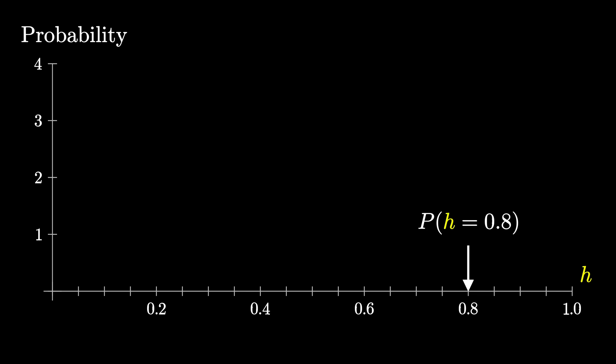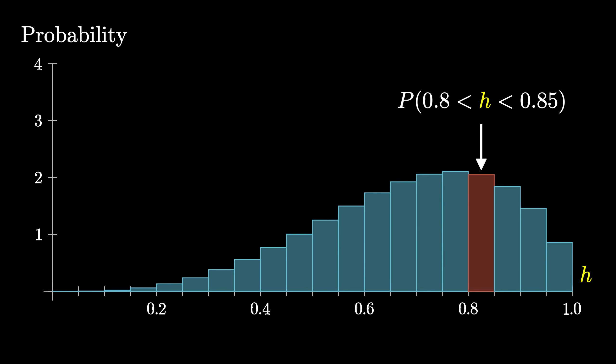The key is not to focus on individual values, but ranges of values. For example, we might make these buckets to represent the probability that H is between, say, 0.8 and 0.85.